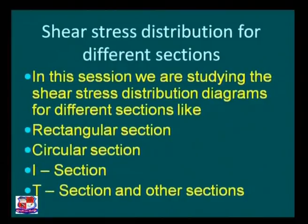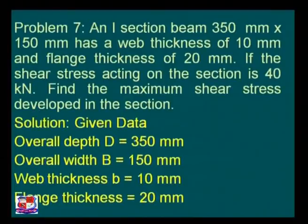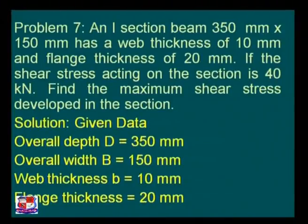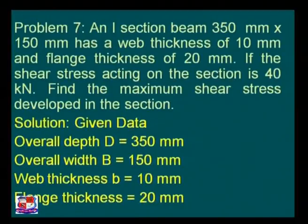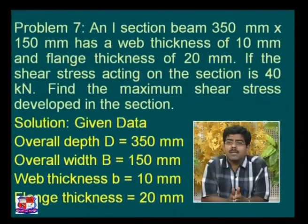Today we will discuss the shear stress distribution diagram specifically for I and T sections, starting with Problem 7: an I-section beam of 350 mm × 150 mm has a web thickness of 10 mm and flange thickness of 20 mm. If the shear force acting on the section is 40 kN, find the maximum shear stress developed in the section.